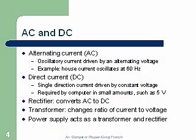AC and DC — two different types of electricity. AC is our alternating current: an oscillatory current driven by alternating voltage. It's generated by a generator, and as the generator turns, the voltage forms a sine wave — it goes positive for a while, then negative. These generators run at about 60 cycles per second, so they have 60 revolutions per second and run very fast.